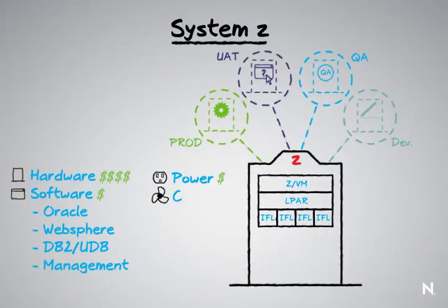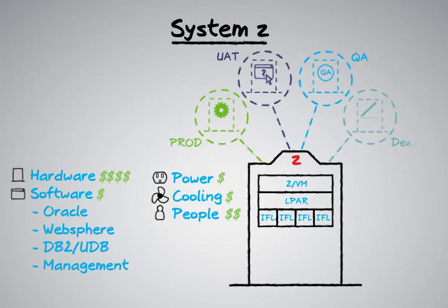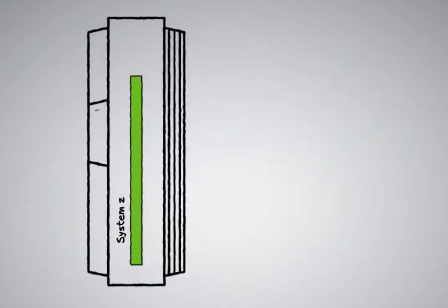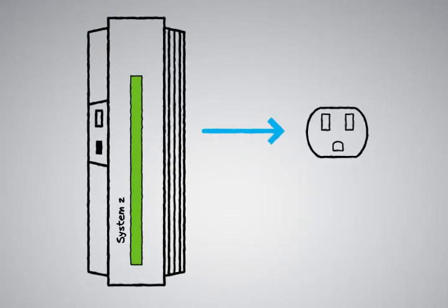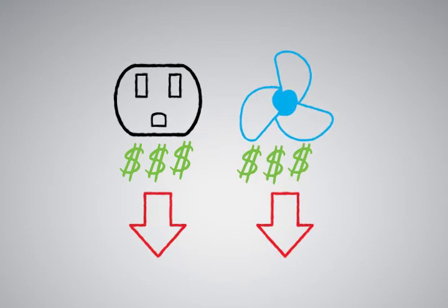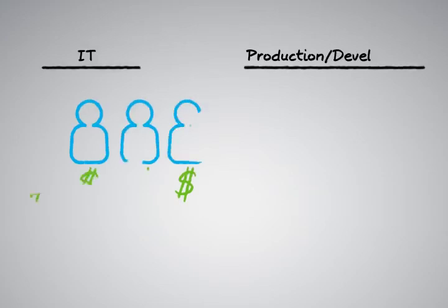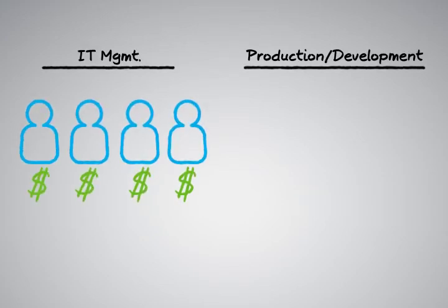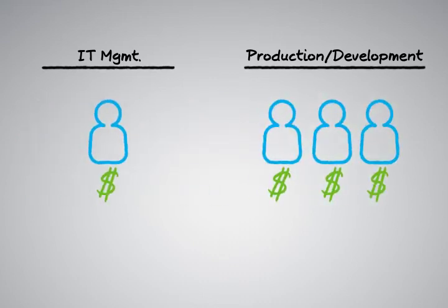And don't forget about power, cooling, and people costs. The System Z footprint is very small — it looks about the size of a large refrigerator. When customers move to a System Z environment from a distributed environment, they see their power and cooling costs drop dramatically, because it's not generating as much heat as all those distributed servers. From a people cost perspective, you're not letting people go — you're allowing them to focus on what's important, and the CIO can redeploy those people to take care of what matters for their business.